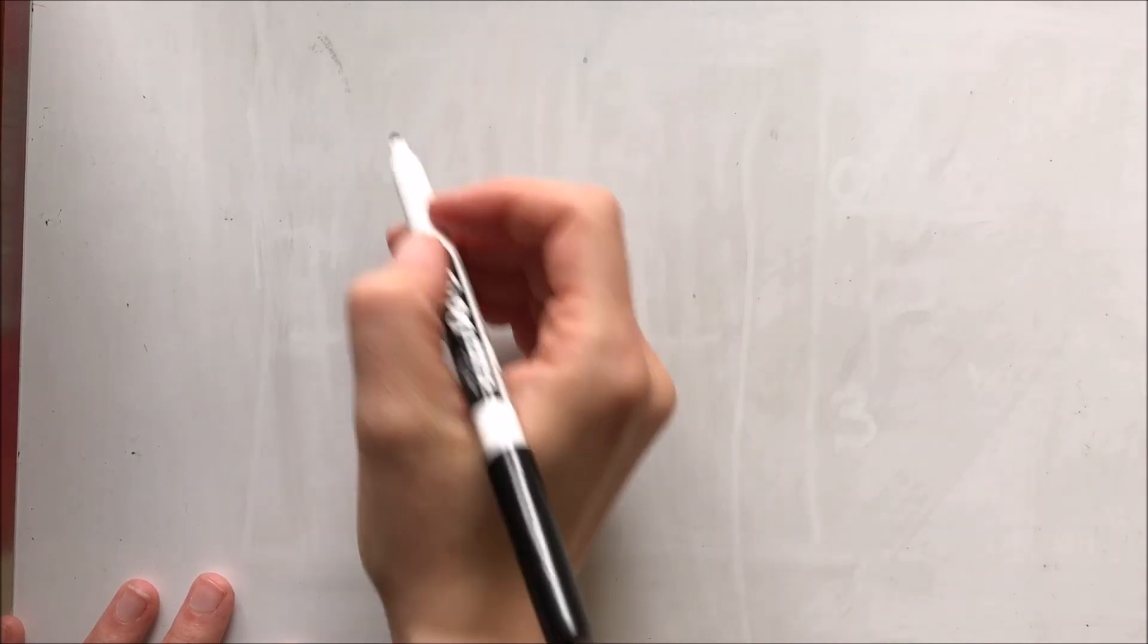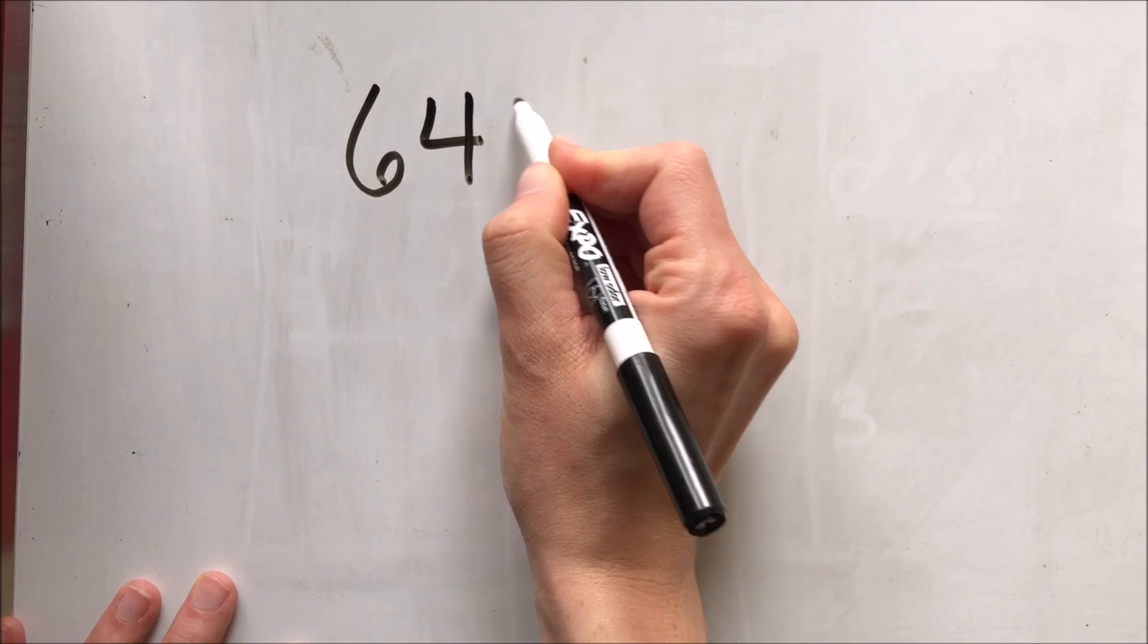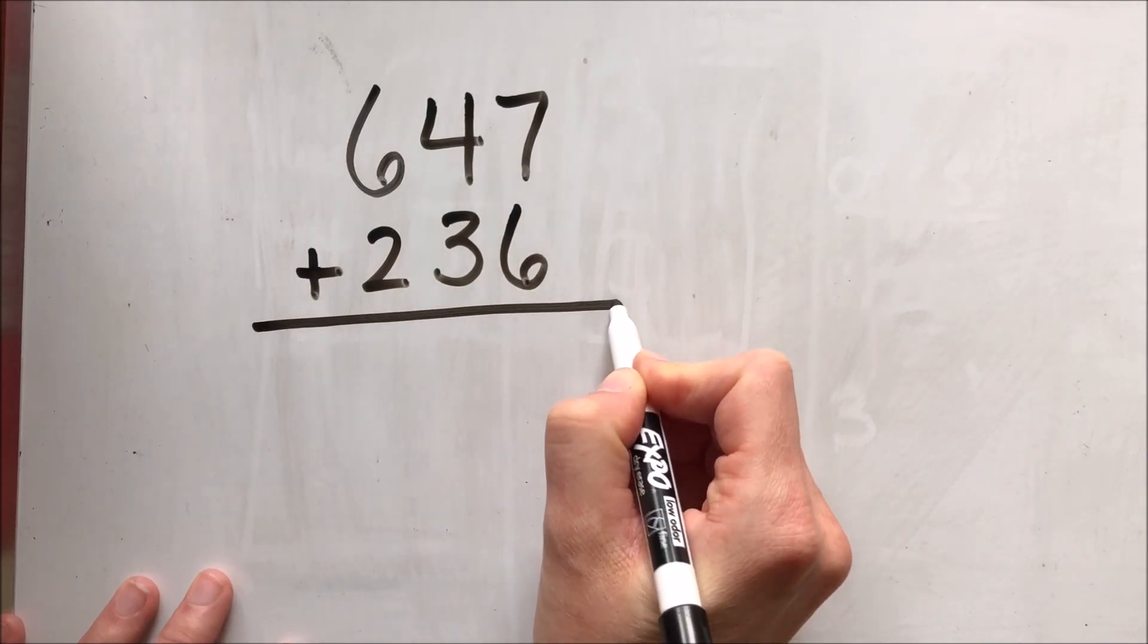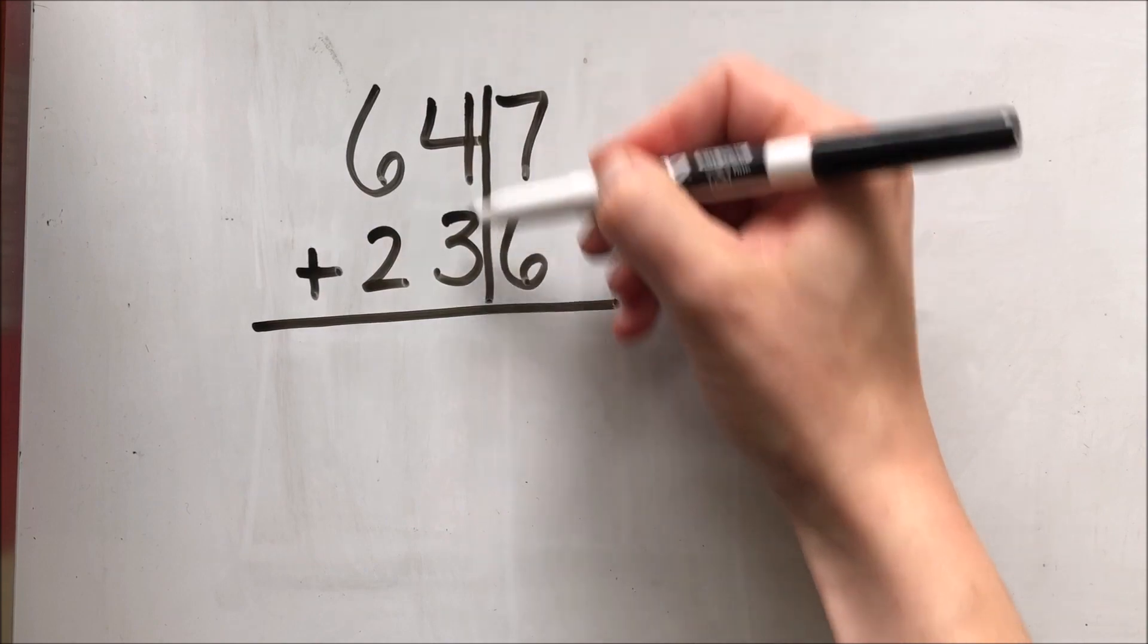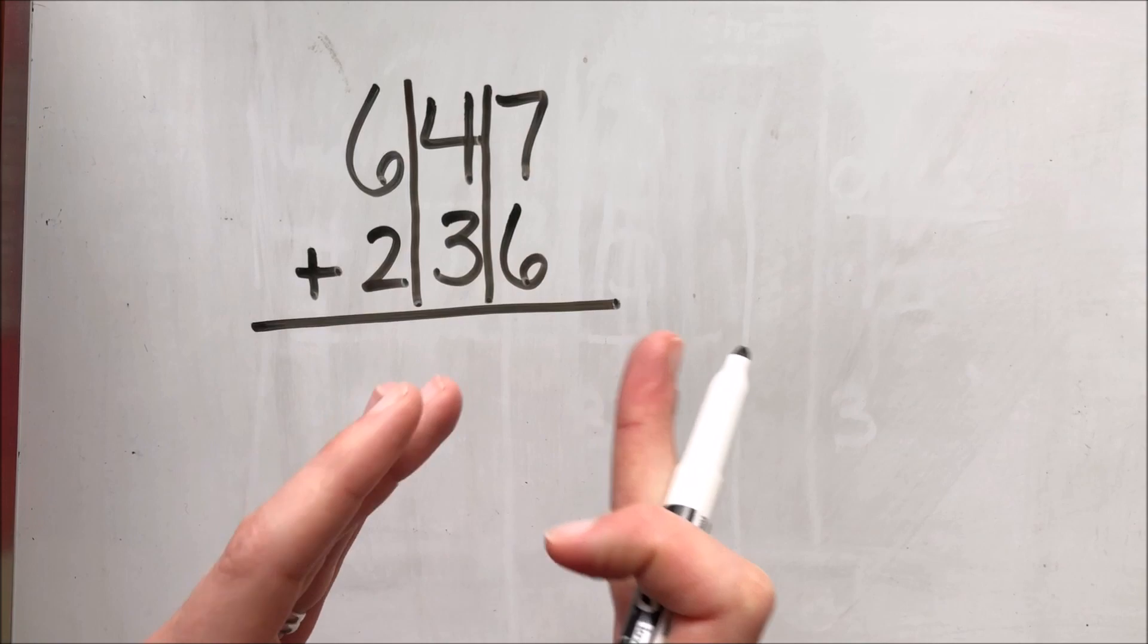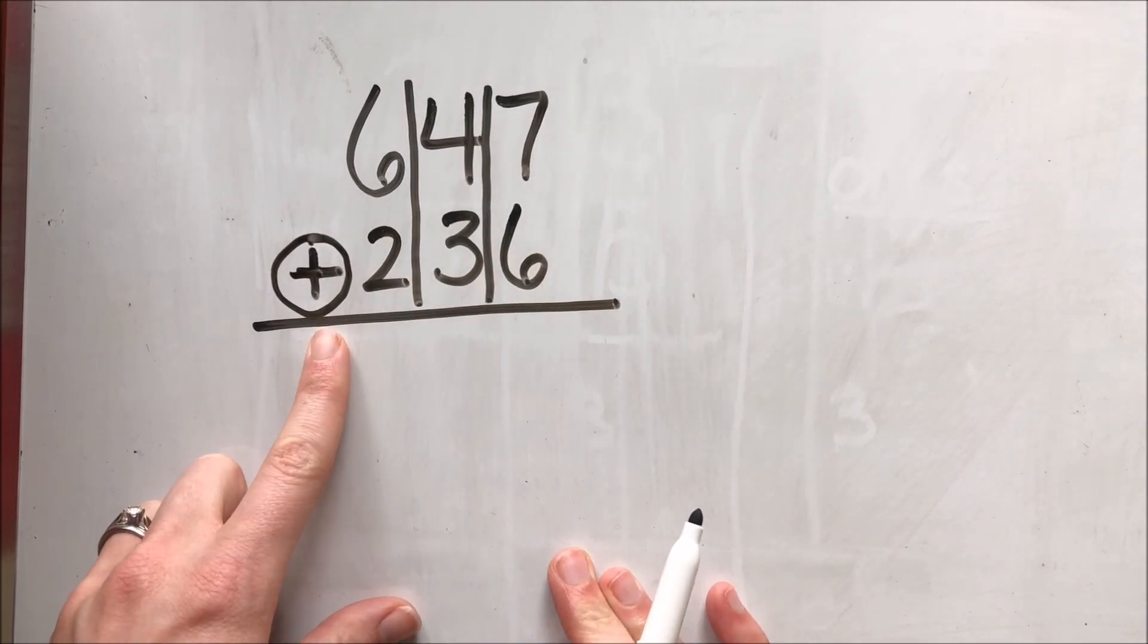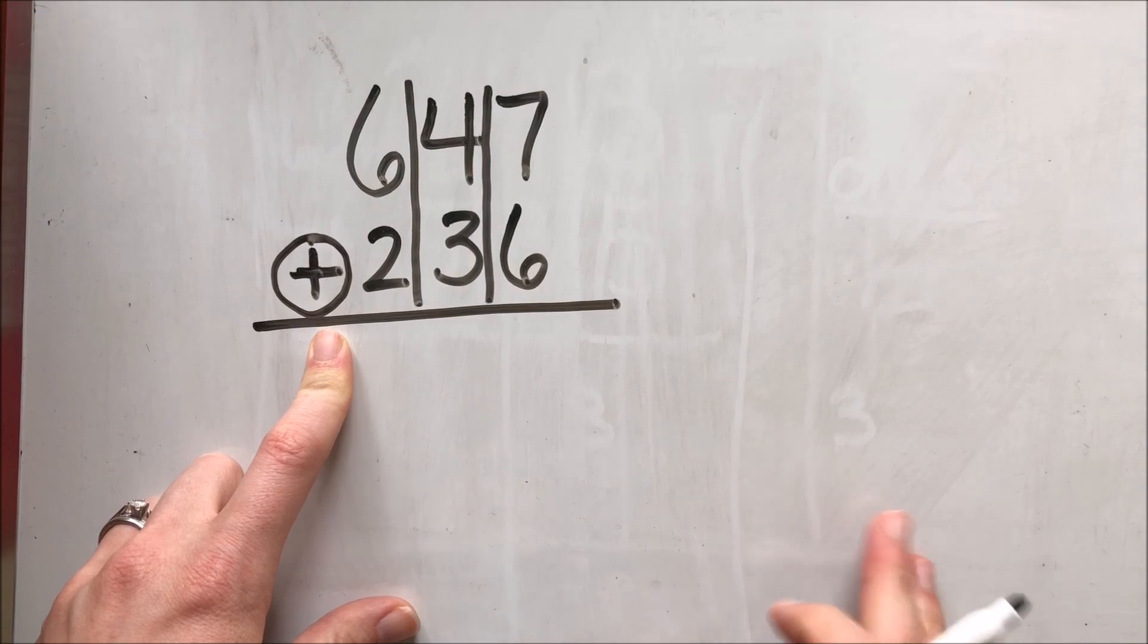Let's start with an addition problem. The first problem we're going to start with today is 647 plus 236. You'll notice as I'm writing this problem I'm going to be writing it vertically up and down and I'm going to draw lines in between each of these place values just to help me keep everything nice and neat so that I'm not adding the ones to the tens or the tens to the hundreds. I'm going to circle my sign because I need to remember that I'm adding and not subtracting.